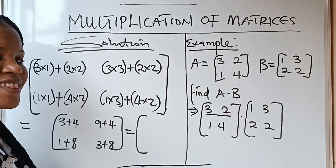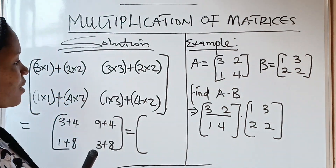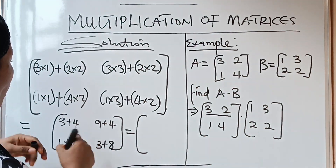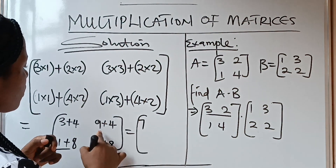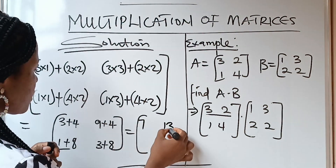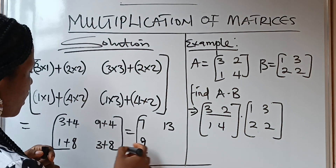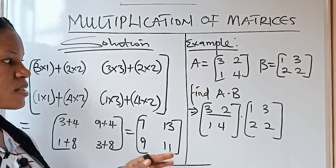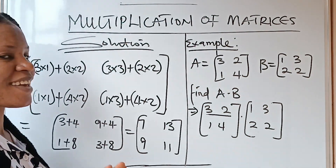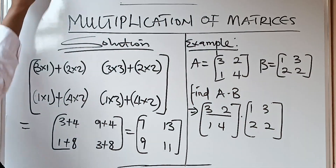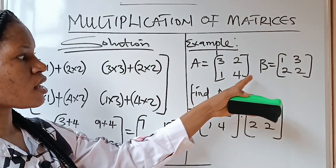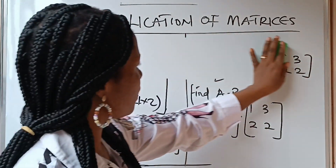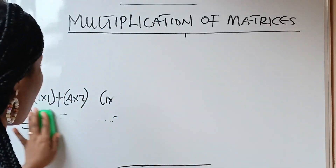Now let's find our final answer. We still going to do this again so that you understand it. 3 plus 4 gives us 7; 9 plus 4 gives us 13; 1 plus 8 gives us 9; and 3 plus 8 gives us 11. So this becomes our answer — [7, 13; 9, 11]. Very easy, right? Let's do another example of a 2 by 2, so that you understand it perfectly.